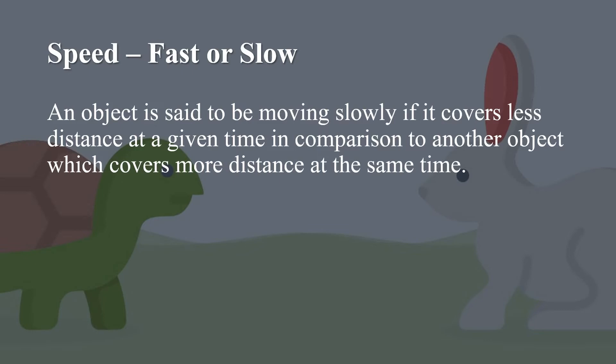Students, the motion of an object can be slow or fast. An object is said to be moving slowly if it covers less distance at a given time in comparison to other objects which cover more distance at the same time.